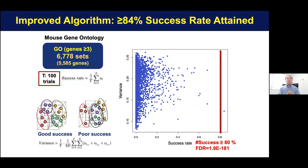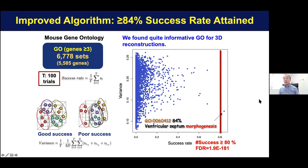Using this algorithm, we checked each gene ontology set from the mouse gene ontology database. We checked 6,000 gene sets including 5,000 genes, tested 100 times and took the average for the success rate, and also checked the variance of final locations of each section. In the plot, the x-axis is the success rate and y-axis is variance. We found a very good gene set here, showing that 84% success is related to morphogenesis, and this is highly significant.